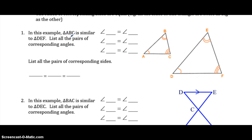In this example, remember that the order of the letters matters. So if triangle ABC is similar to DEF, we're going to list all the pairs of corresponding angles. Because there's one tick mark here, angle A is equal to angle D. A is the first letter written, so that goes with D, which is the first letter written. Two lines: angle B is equal to angle E. B is the second letter written and E is the second letter written. And three ticks: angle C equals angle F, the third letter written. So the order of the letters indicates the order of the equal angles.